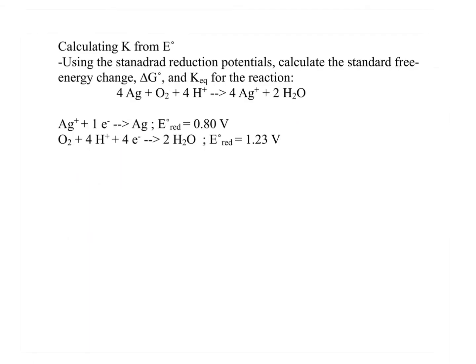Let's take a look at some practice problems involving the calculation of K, cell potential, and delta G. In this problem, four atoms of silver and oxygen and four ions of hydrogen produce four ions of silver and two water molecules. We're asked to calculate the standard free energy delta G and also the equilibrium constant. To do this, we need two things: first, the cell potential, and second, the number of moles of electrons transferred.